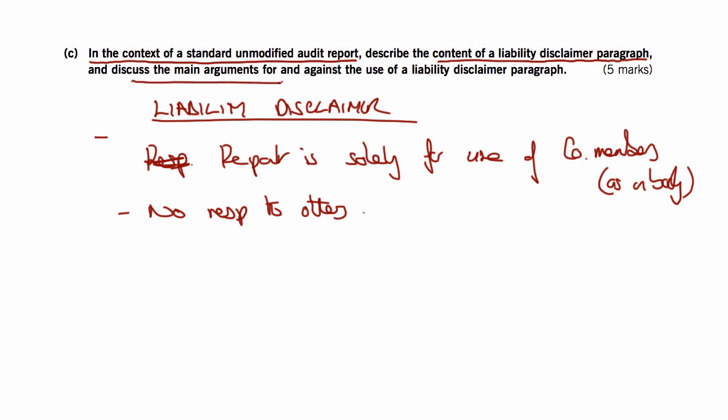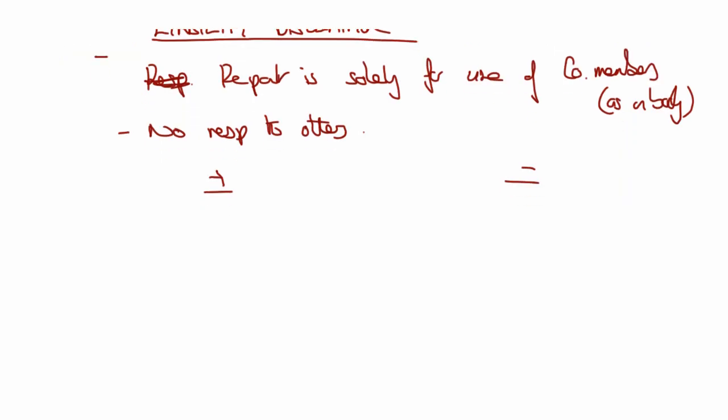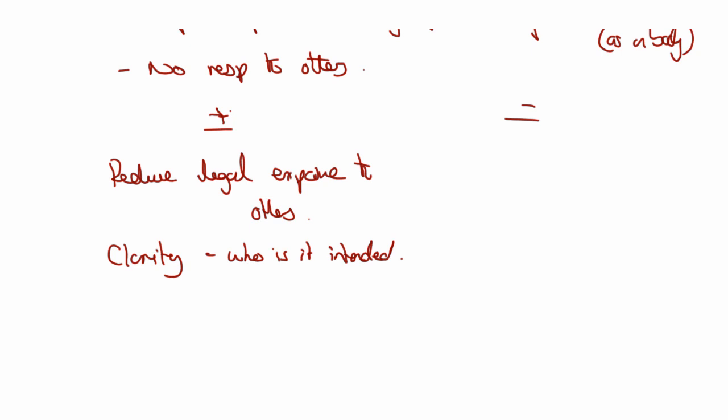Discuss the main arguments for and against the use of this. Well, there's an obvious advantage, isn't there? You reduce your legal exposure to others, to those outside the members of the company. You're giving clarity as to who the report is for. It might also put off people who are thinking of suing you and they say, well okay, they've got that disclaimer in. We don't really have a leg to stand on.